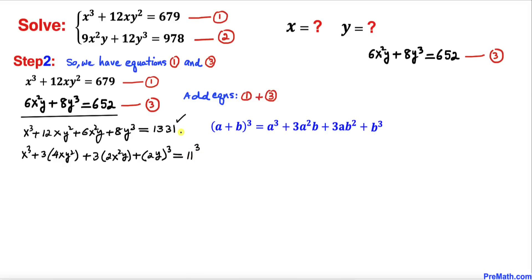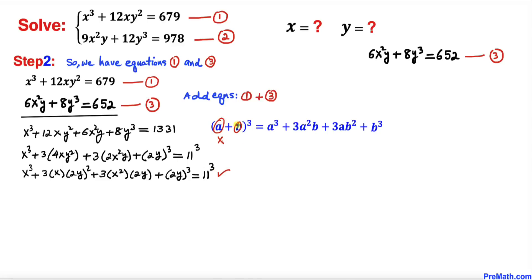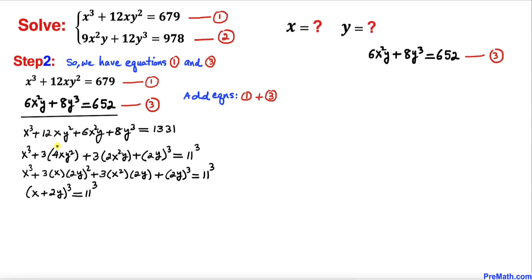We can see that a = x and b = 2y. So therefore our left-hand side becomes simply (x + 2y)³ = 11³. Since both sides have the same exponent, we can equate their bases, giving us x + 2y = 11. Let's call this equation number four.